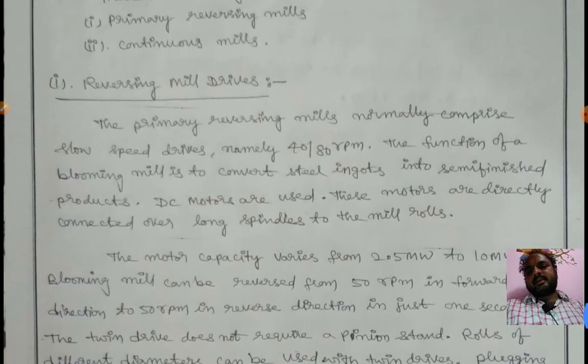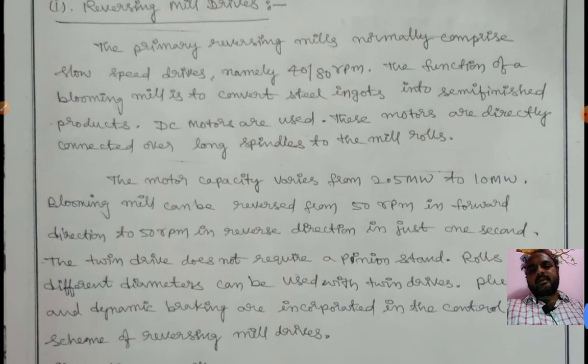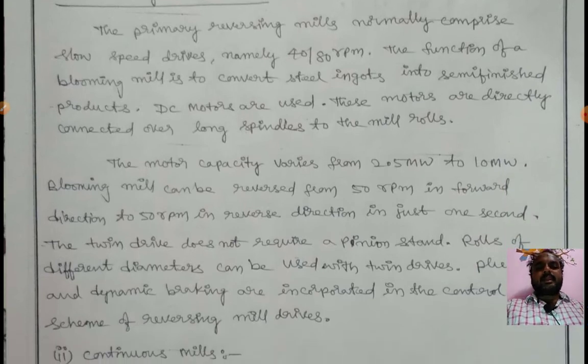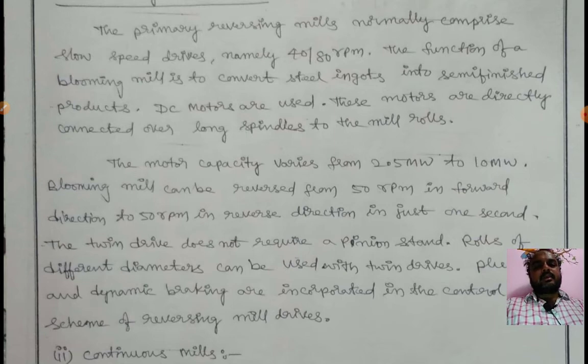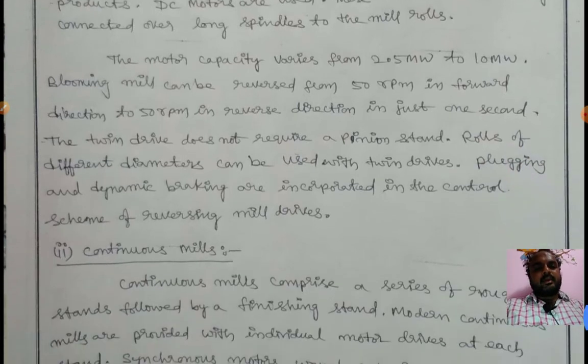Primary reversing mills normally comprise slow speed drives, normally 40 to 80 RPM. The function of the blooming mills is to convert steel ingots into semi-finished products. DC motors are used in this type of mill. These motors are directly connected over long spindles to the mill rolls.